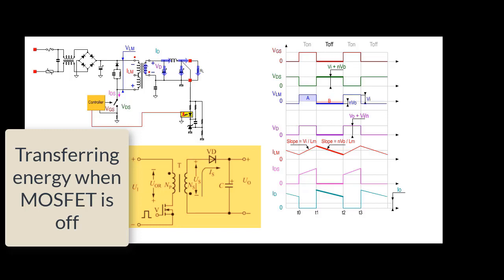According to the principle of electromagnetic induction, an induced voltage will now be generated in the primary winding, and voltage will be generated in the secondary winding with positive polarity at the upper end and negative polarity at the lower end. Therefore, the diode is conducted and the output voltage is obtained after rectification and filtering.